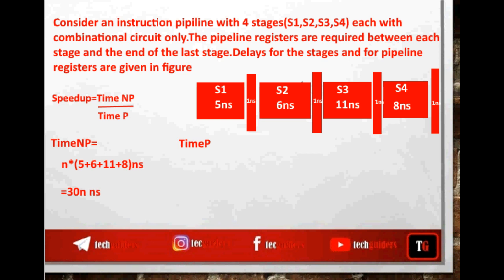Stage 1 total delay is 5 + 1 = 6 nanoseconds. Stage 2 total delay is 7 nanoseconds. Stage 3 delay is 12 nanoseconds. Stage 4 delay is 9 nanoseconds. Hence, the longest stage delay is 12 nanoseconds, and thus the clock period is equal to 12 nanoseconds.